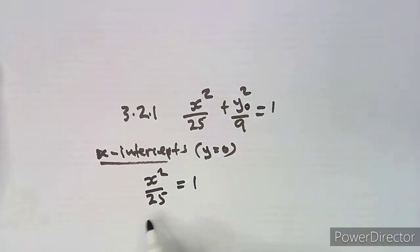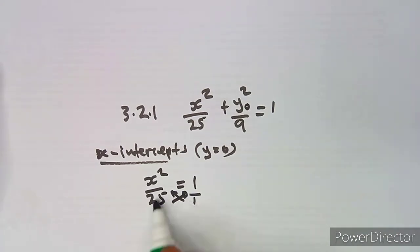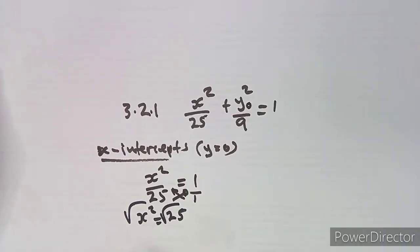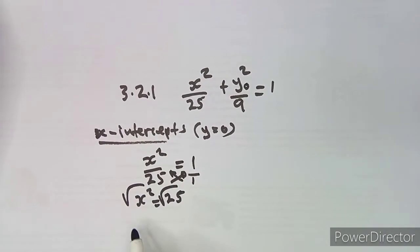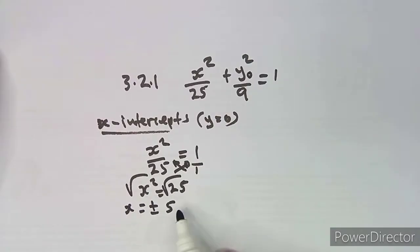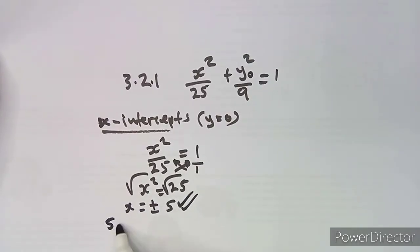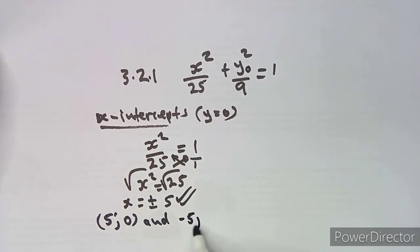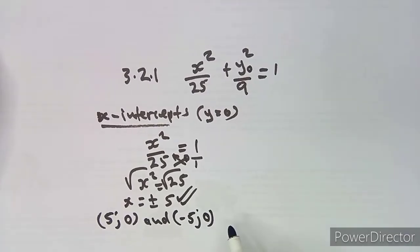Cross-multiplying gives x squared equal to 25. Taking the square root to remove the square, x equals the square root of 25, which is 5. Since the square root of a number is plus or minus, we have two values: x = 5 when y = 0, and x = -5 when y = 0.